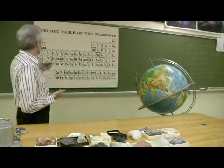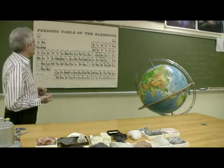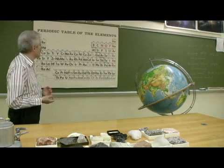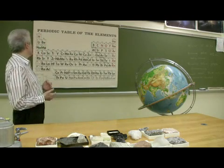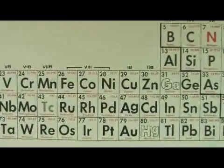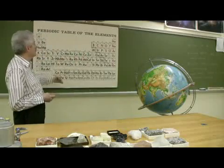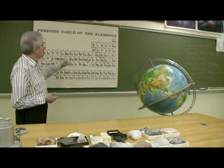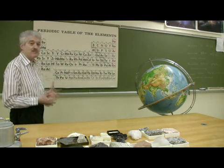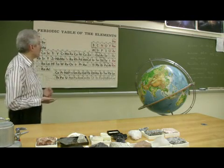If we look at the element nickel, let's examine some examples of how alloys form and what they're used for. Nickel on the periodic table is in what we call the transition metal group, and it's alloyed with a number of other metals to make specific products. We'll look briefly at just four of them.